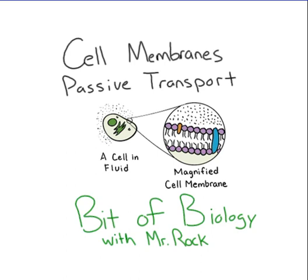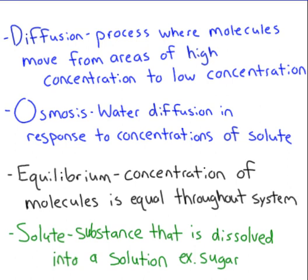This is a bit of biology with Mr. Rock, and today we are going to be talking about passive transport. The theme of this overall video is cell membranes, but we are going to talk about how certain molecules move across the cell membrane. Before we begin, we need to understand a couple definitions. Number one is diffusion — this is a process where molecules move from areas of high concentration to low concentration.